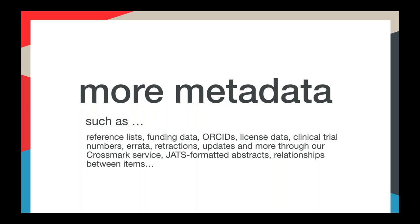When you register your content with us, you're creating a complete metadata record. We collect a lot of metadata that goes beyond the basic bibliographic data used to cite an item. We collect reference lists, particularly for journal articles but also increasingly for books. We collect funding data — information about who is funding the research being published. We collect ORCIDs, which is an identifier for authors, license data, clinical trial information, information about errata, retractions, updates and withdrawals through our Crossmark service. We collect abstracts, and we're starting to collect a lot of data about relationships between items.